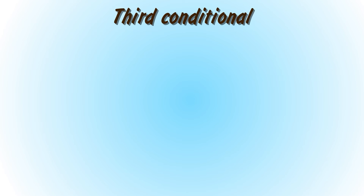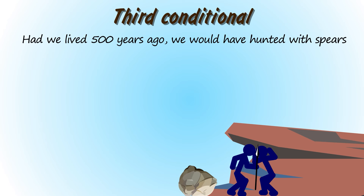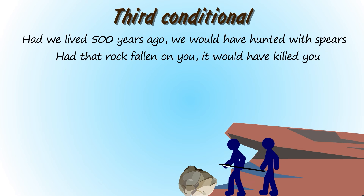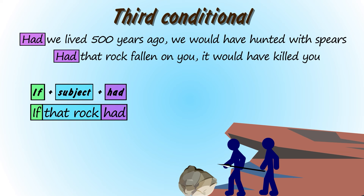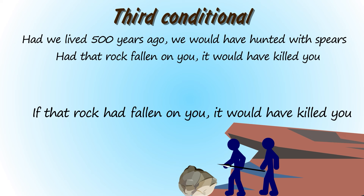Let's look at the third conditional. Had we lived 5000 years ago, we would have hunted with spears. Had that rock fallen on you, it would have killed you. We can use had as an alternative to if, but the structure of the sentence changes slightly. Instead of if plus subject plus had, we can say had plus subject. So had that rock fallen on you, it would have killed you means the same as if that rock had fallen on you, it would have killed you.